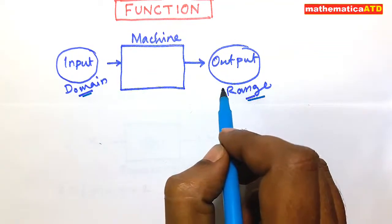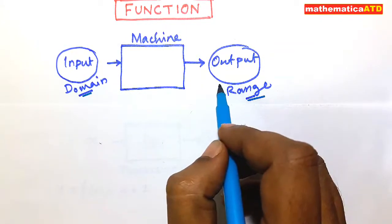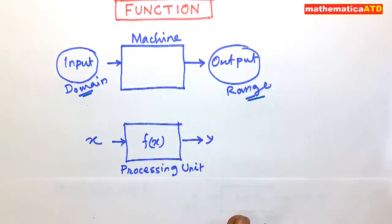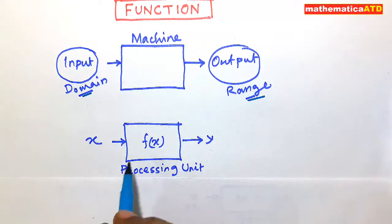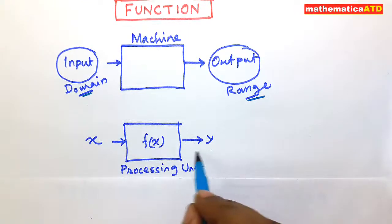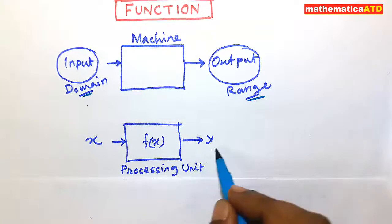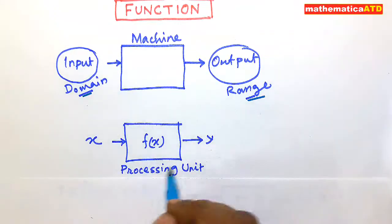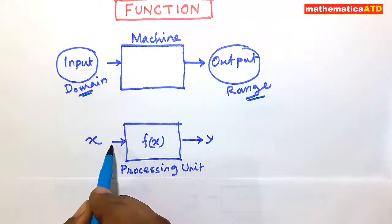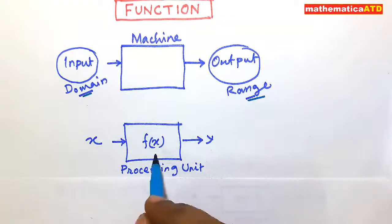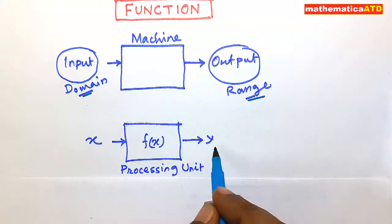Functions can be understood as an operator between X and Y. As X is fed as an input, we get Y as the corresponding output. You can think of this machine as a processing unit — if you input something, the machine will process it and give an output, say Y.